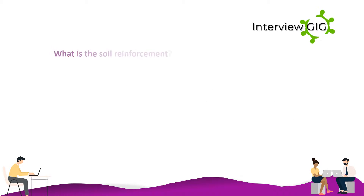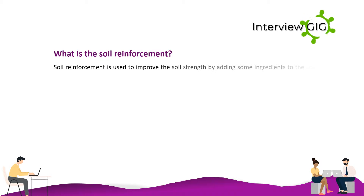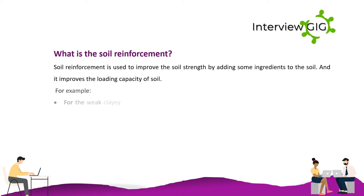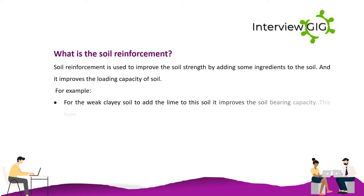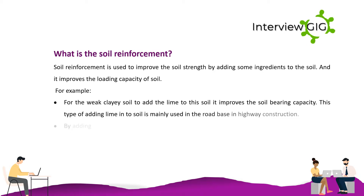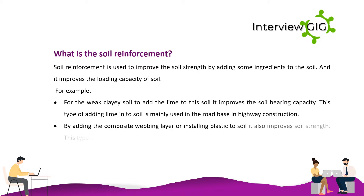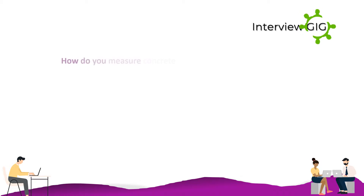What is soil reinforcement? Soil reinforcement is used to improve soil strength by adding some ingredients to the soil, and it improves the load-bearing capacity of soil. For example, for weak clay soil, adding lime improves the soil bearing capacity. This method is mainly used in road and highway construction. Adding composite webbing layers or installing plastic into soil also improves soil strength, and this method is used in steep roadway embankments.